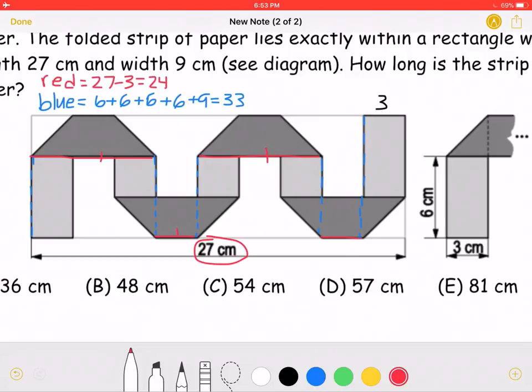here, here, and here, the length of the red will be 27, minus 3, because that's the width of the strip. So the red adds up to 24.